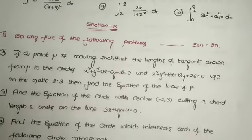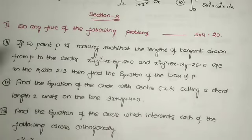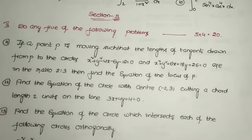Now Section B — these are the four-mark questions. We have seven questions here but we have to attempt only five questions. Each one carries four marks. The first question: attempt any five of the following — question 11.